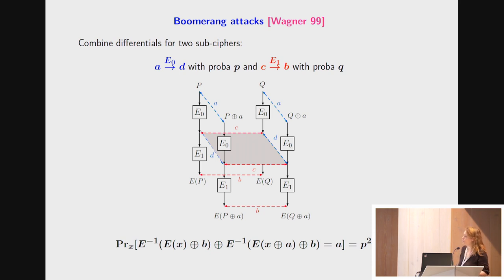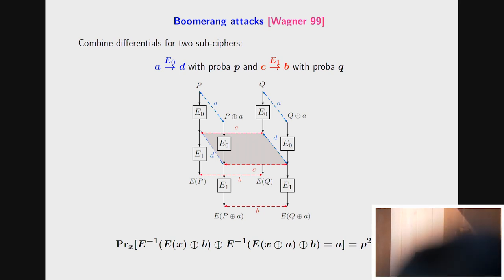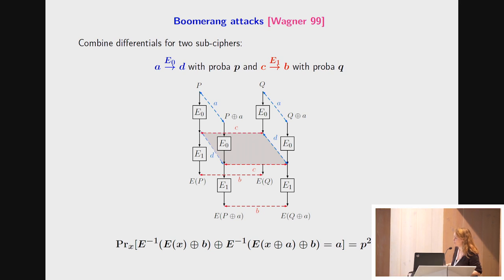More precisely, what we do is divide the cipher into two halves, E0 and E1. We first consider a differential A→D for the first half of the cipher, which means that with high probability, if we consider a pair of plaintexts P and P⊕A and take the images under E0, then we get two elements which differ by D. From these two elements, we consider a second differential C→D for the second half of the cipher. If we add C to the two elements previously obtained, then we get a quartet.